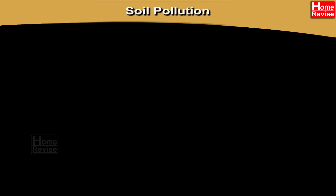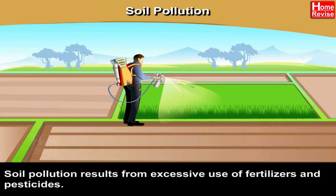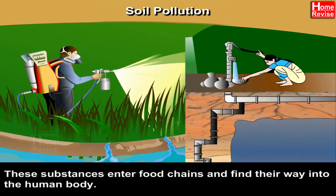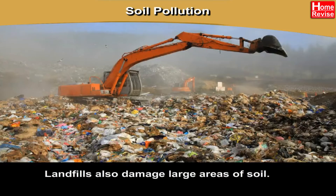Soil Pollution: Soil pollution results from excessive use of fertilizer and pesticides. These substances enter the food chain and find their way into the human body. Landfills also damage large areas of soil.